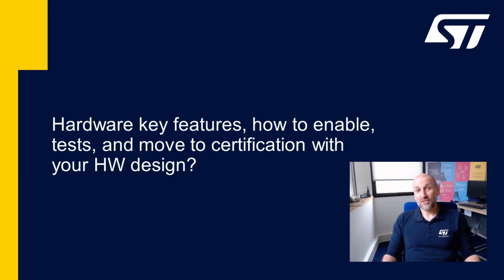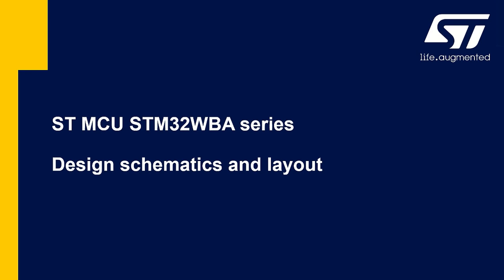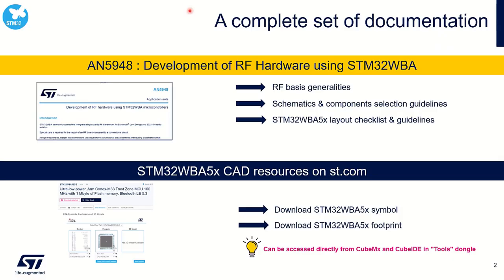Let's start by how to design your schematics and layout when using STM32WBA5. A complete set of documentation is available on ST.com. The main entry documentation when starting a design will be the application note 5948. This application note will give you RF basis generalities and will provide a guideline for component selection. It also provides guidelines regarding layouts with a very useful layout checklist.